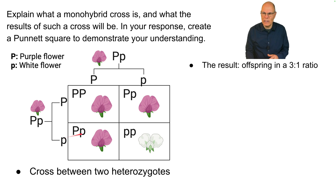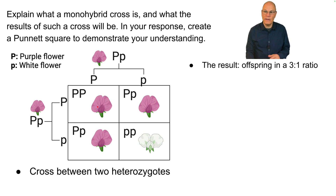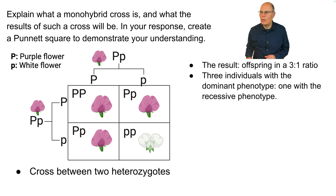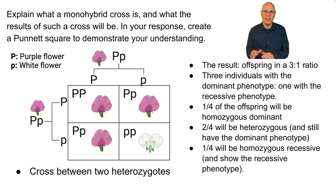Flowers are hermaphroditic, so it doesn't really make sense to talk about father and mother. The gametes will fertilize one another — if this were pollen, the equivalent of sperm, it would fertilize the egg. When big P combines with big P, we get a capital P, capital P organism — homozygous dominant with the dominant phenotype. When big P combines with little p, we get a heterozygote that still has the dominant phenotype. Two little p's gives homozygous recessive, showing the recessive phenotype: white flowers. So three individuals have the dominant phenotype, one has the recessive — a quarter homozygous dominant, half heterozygous, and one quarter homozygous recessive showing the recessive phenotype.